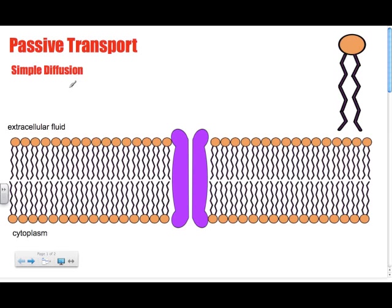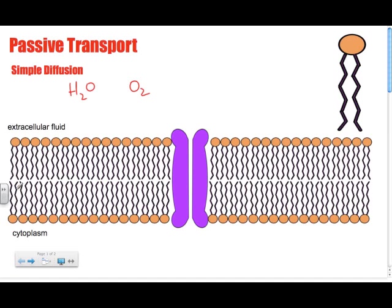Things that cells need — like water and oxygen — are particles that are very, very small. These small particles easily pass through what we call the phospholipid bilayer. This membrane here is what we call the phospholipid bilayer.